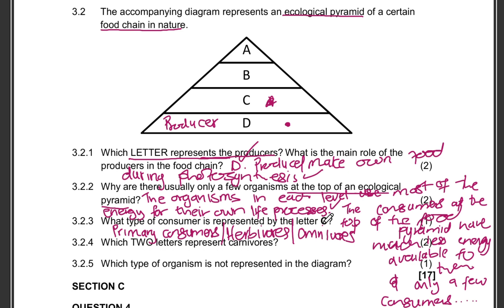Which two letters represent carnivores? So obviously if we are finding herbivores in letter C, we are obviously going to find carnivores in letters A and B. Which type of organism is not represented in the diagram? Decomposers. Decomposers are not represented in the ecological pyramid that we have been given. Alright, check out the next video guys for question 4.